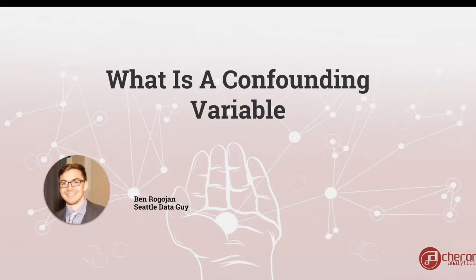At a high level, a confounding variable is just something that you might be making an assumption about that you're not considering when you're making a conclusion.